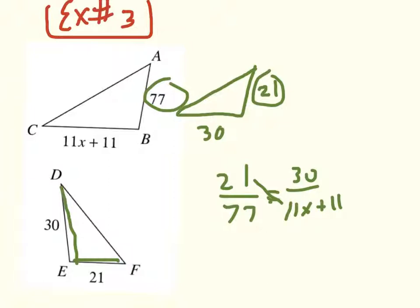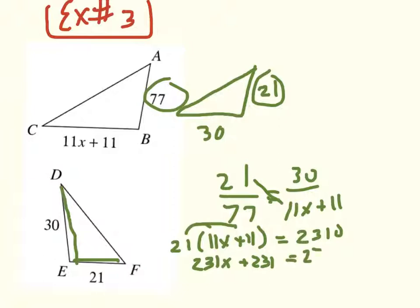So I'm going to guess I'm going to run out of room here, but let's do our best. 21 times 11x plus 11 equals 30 times 77. Now, that's a big one for me, so I'm going to use my calculator. And I get 2,310.